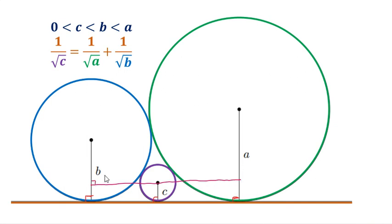This angle is 90, and this is also 90. Now I will label the points of intersection. Let's say this is W and this one is X.